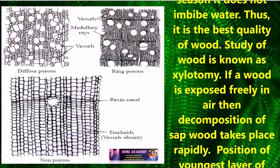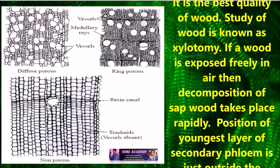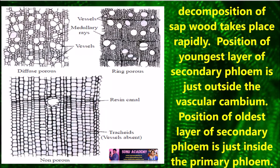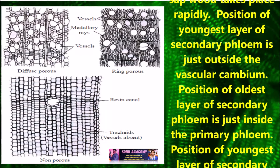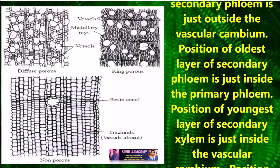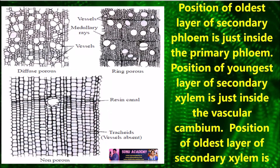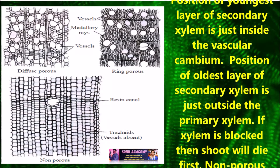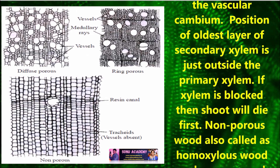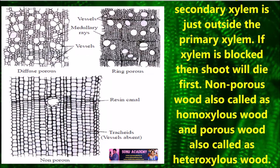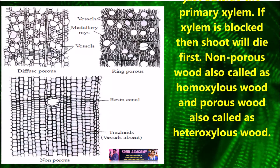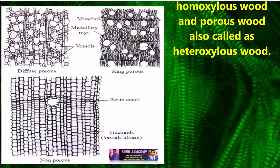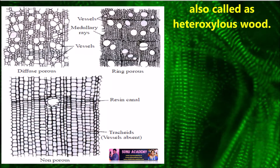The study of wood is known as xylotomy. If wood is exposed freely to air, decomposition of sapwood takes place rapidly. The youngest layer of secondary phloem is just outside the vascular cambium, and the older layer of secondary phloem is just inside the primary phloem. The youngest layer of secondary xylem is just inside the vascular cambium, and the older layer of secondary xylem is just outside the primary xylem. If the xylem is blocked, the shoot will die first. Non-porous wood is also called homoxylic wood, and porous wood is also called heteroxylic wood.